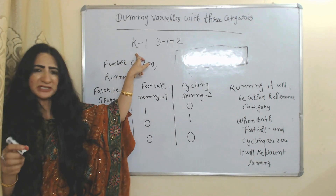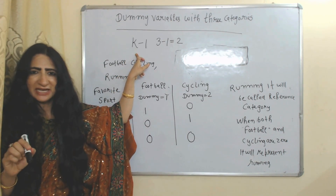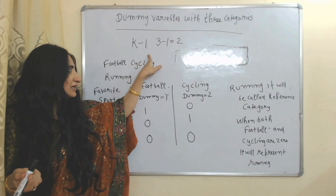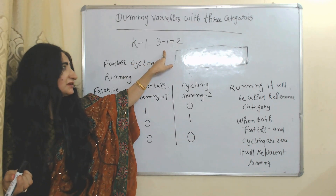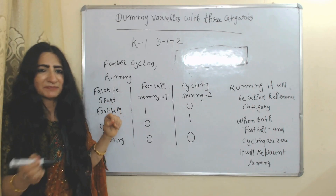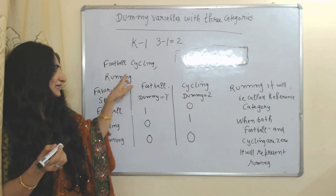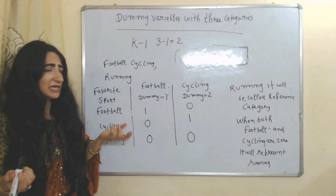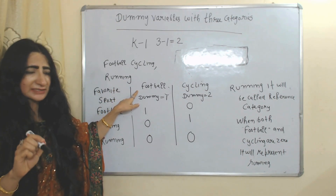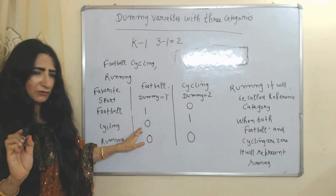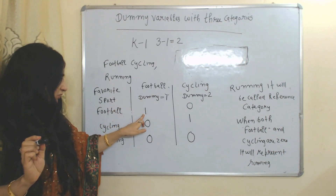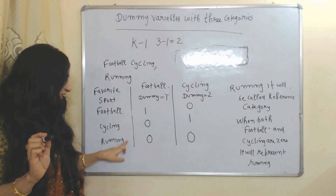The formula for keeping dummy variables is K minus one, where K represents categories. Here we have three categories, so the value of K equals three. Three minus one equals two, meaning we will keep two variables as dummies. Here we have three activities: football, cycling, and running. Suppose we keep football and cycling as dummy variables. If football is a dummy variable, then football equals one and the other variables — cycling and running — are equal to zero.